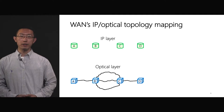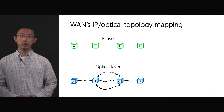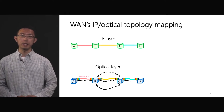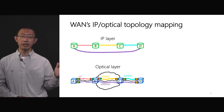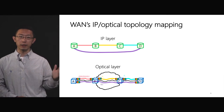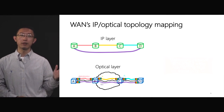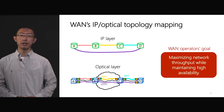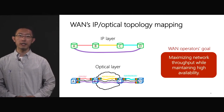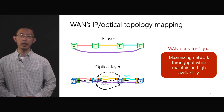There is a complex relationship between the IP and optical layers. For example, in this four-node network topology, IP link AB is supported by wavelengths running through A and B. Similarly, we can have IP links BC and CD. We can also set up a direct IP link between A and D by configuring the wavelengths from A to D, bypassing B and C. With the IP optical mapping, the fiber topology on the optical layer is usually different from the topology on the IP layer, and the WAN operator's goal is to maximize network throughput while maintaining high availability.